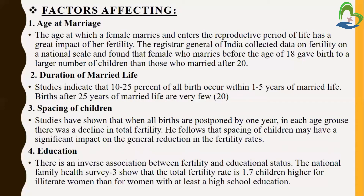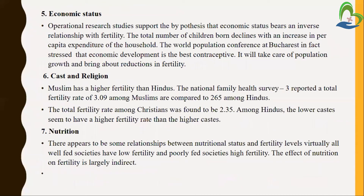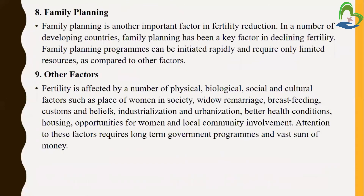So all these six factors are affecting the fertility rate: age at marriage, duration of married life, spacing between two children, educational and economic status, caste and religion, and nutrition. Family planning and other factors are also related to the fertility rate. In many developing countries, family planning has been a key factor in declining the fertility rate. Family planning programs can be initiated rapidly and require only limited resources compared to other factors. Other factors include physical, emotional, biological, social, and cultural aspects — widow marriage, breastfeeding, lactating mothers, customs and beliefs.